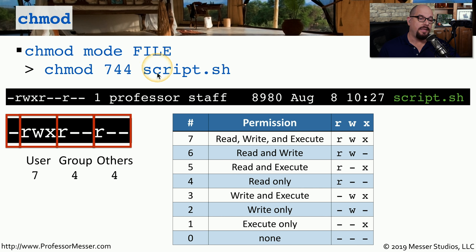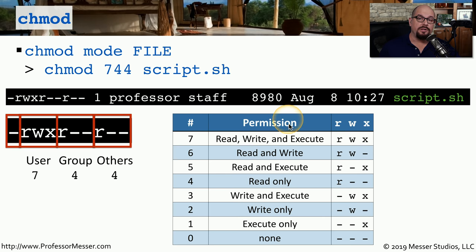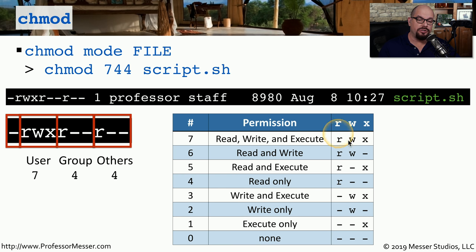Let's break down what 'chmod 744 script.sh' does. The mode is 744 — the first number is the owner's permissions, the second is the group's permissions, and the third is everyone else's. Each number is a binary representation of read, write, and execute access. Zero means no access at all, and seven — the highest level — turns on read, write, and execute. So 7 gives the owner full access, 4 gives the group read-only, and 4 gives everyone else read-only.